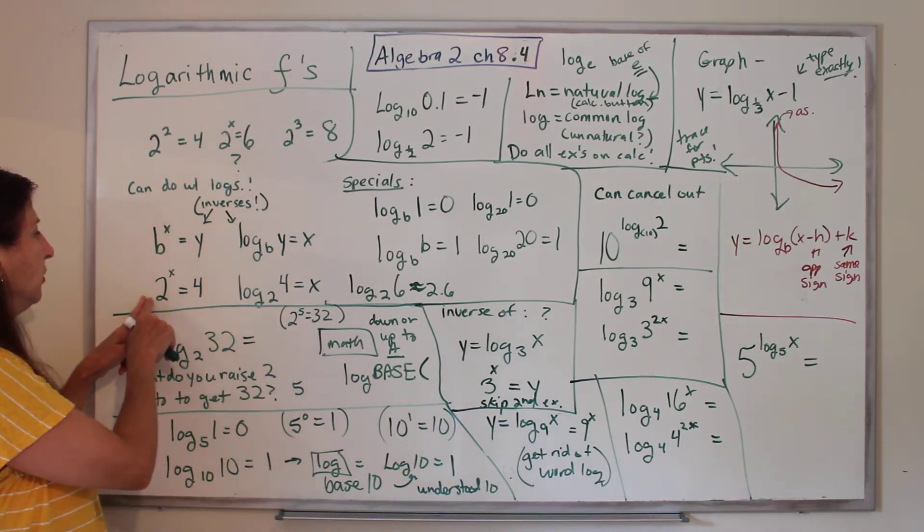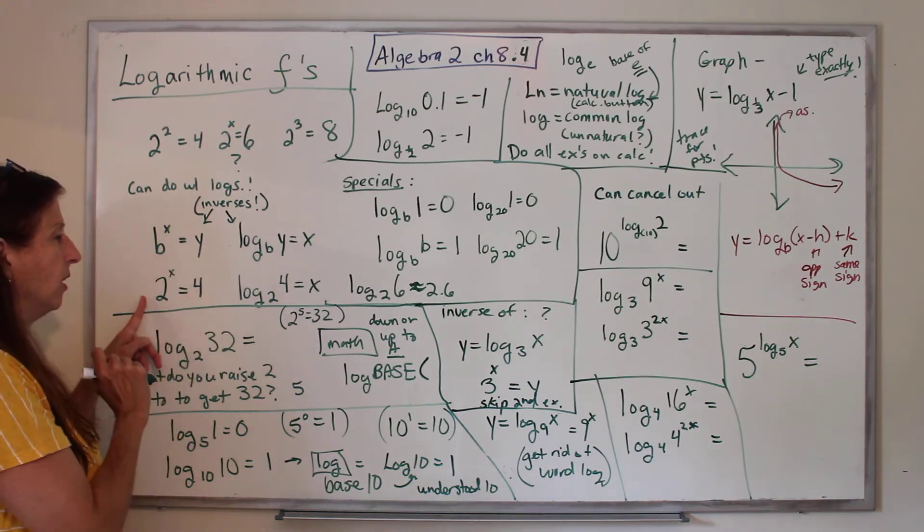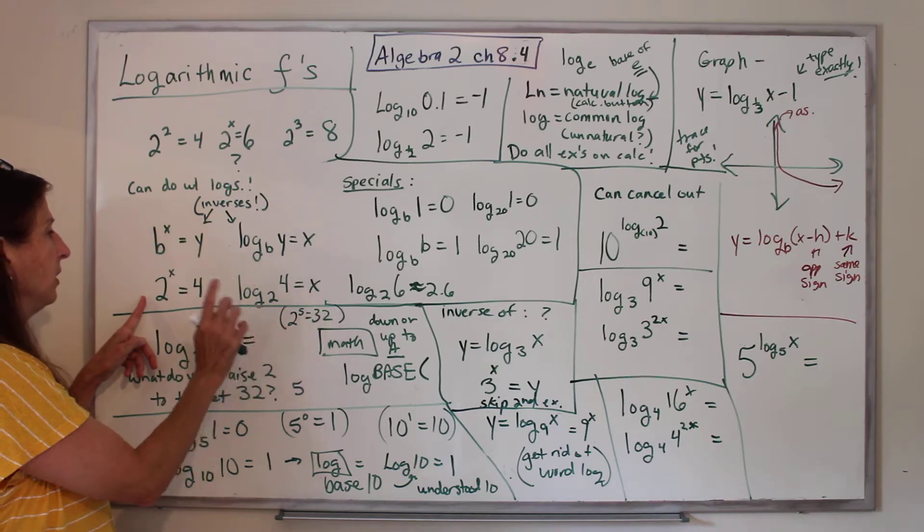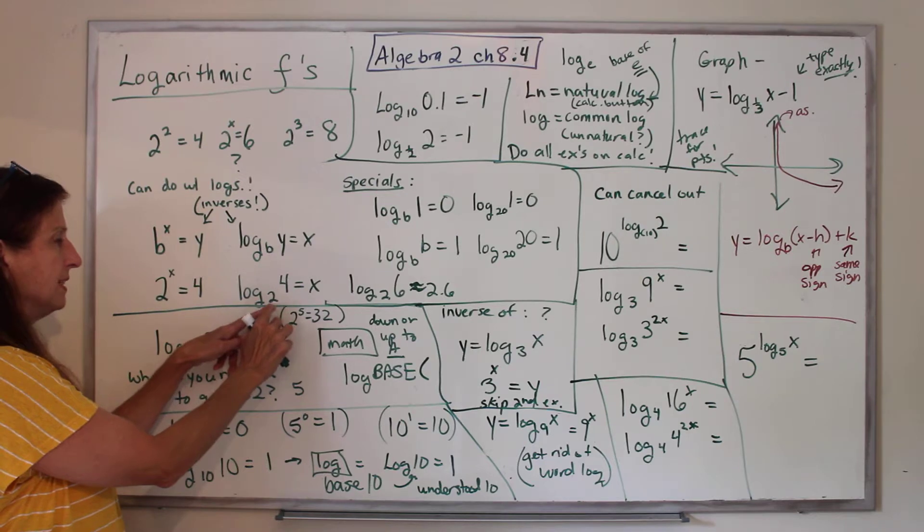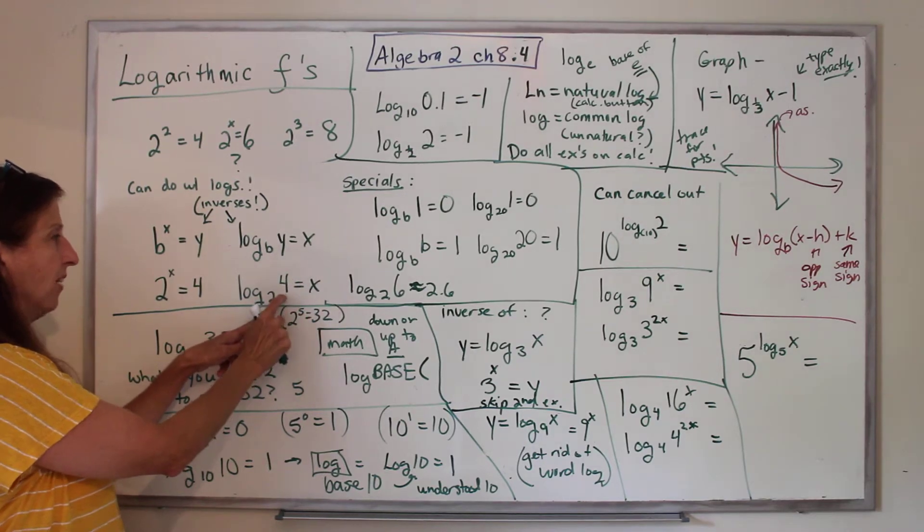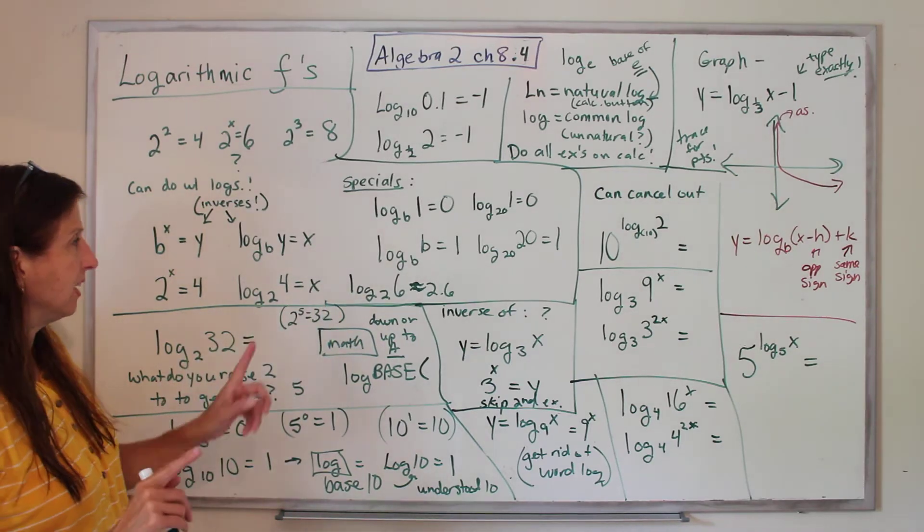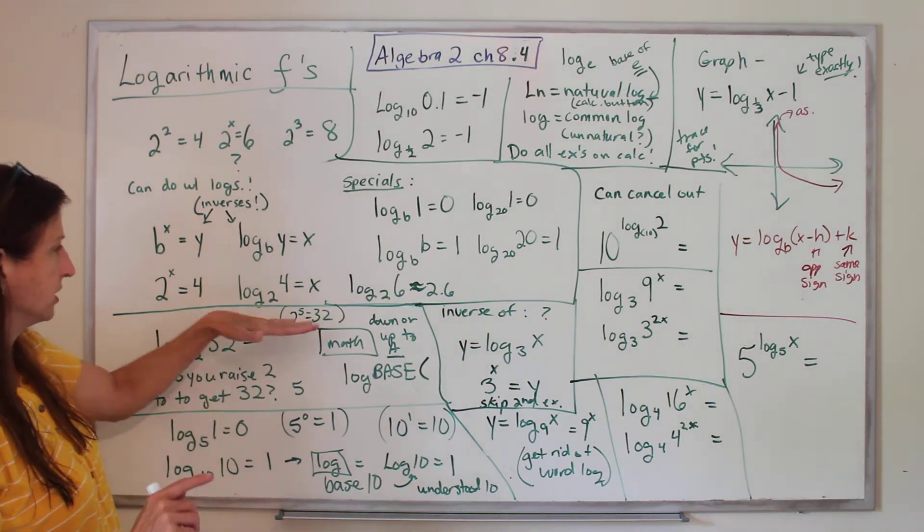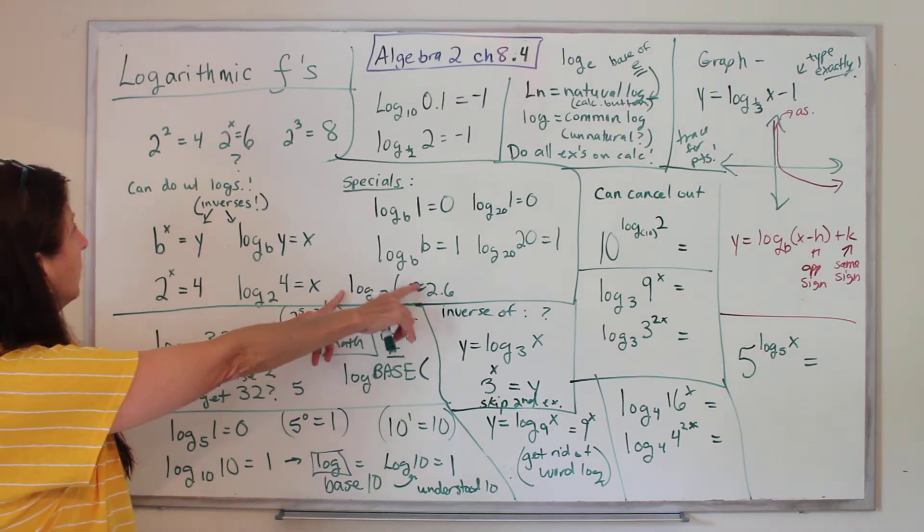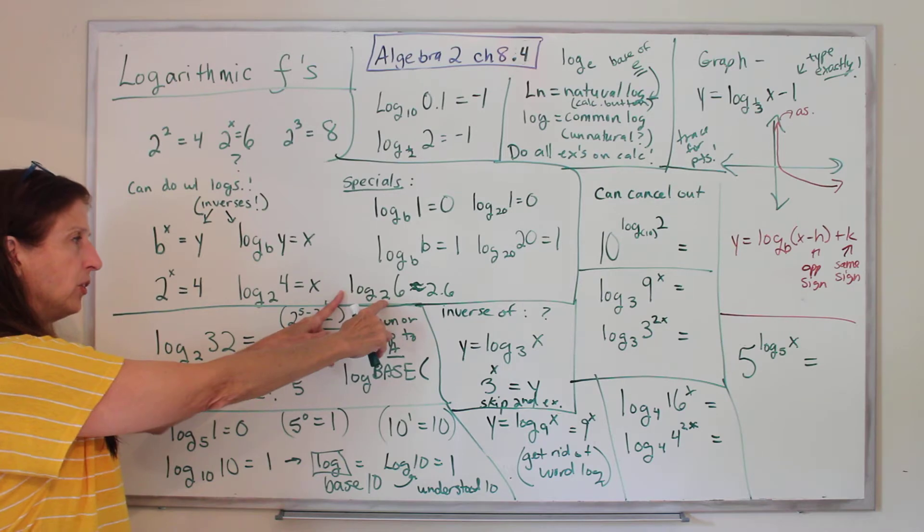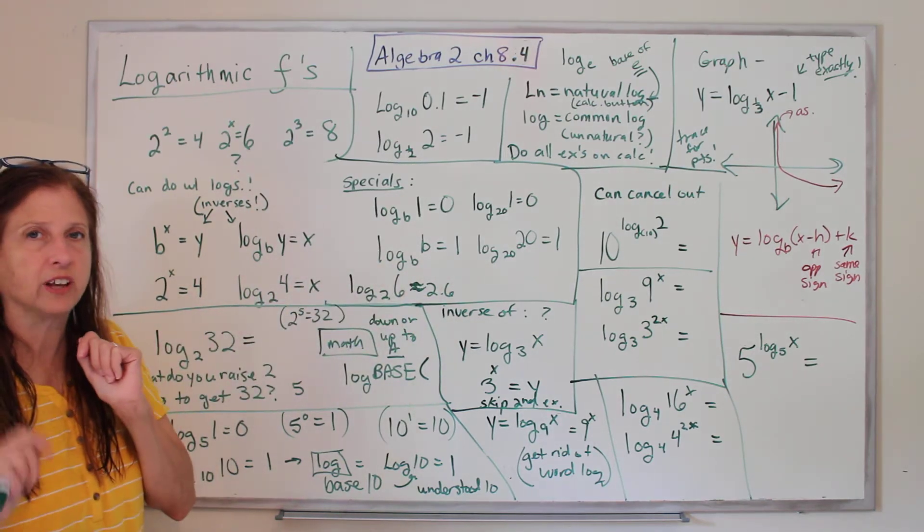Okay, so here's an example. 2, what power do we raise 2 to to get 4? We raise 2, so this is writing it a different way. The base is 2. The answer is 4. What is the power we're going to raise it to? Now, turns out we can do it on our calculator, which I'll show you in just a second. And then this was our original question. What do we raise 2 to to get 6? And we can do both of those using our calculator.